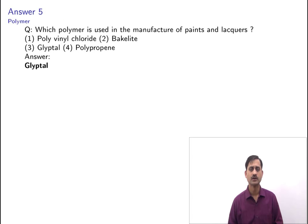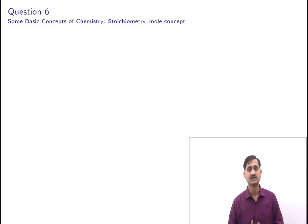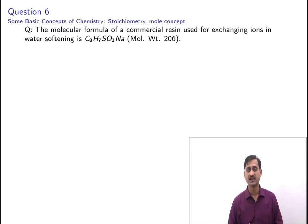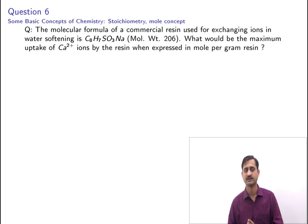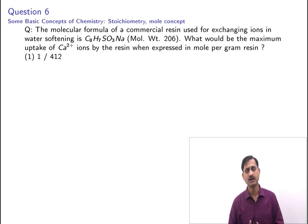The next question is from basic concepts of chemistry, stoichiometry and mole concept. The molecular formula of a commercial resin used for exchanging ions in water softening is C₈H₇SO₃Na, molar mass 206. What is the maximum uptake of calcium ions by the resin when expressed in moles per gram resin? Options: 1/412, 1/103, 1/206, or 2/309.